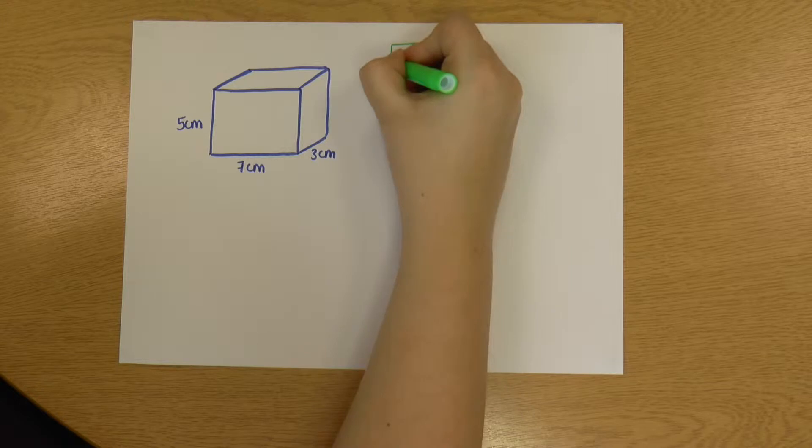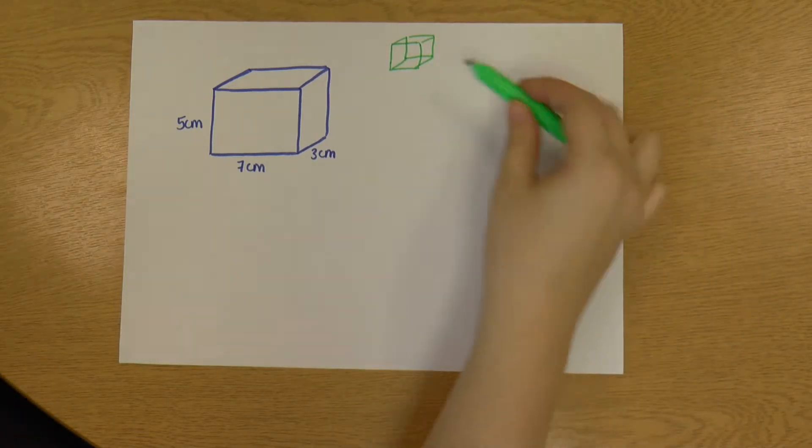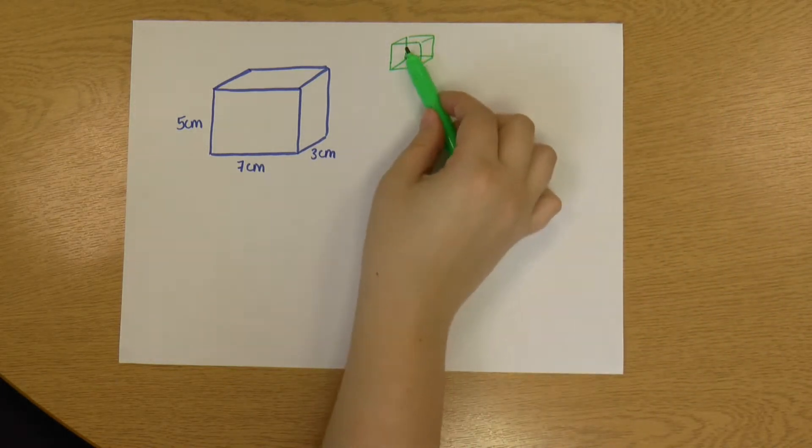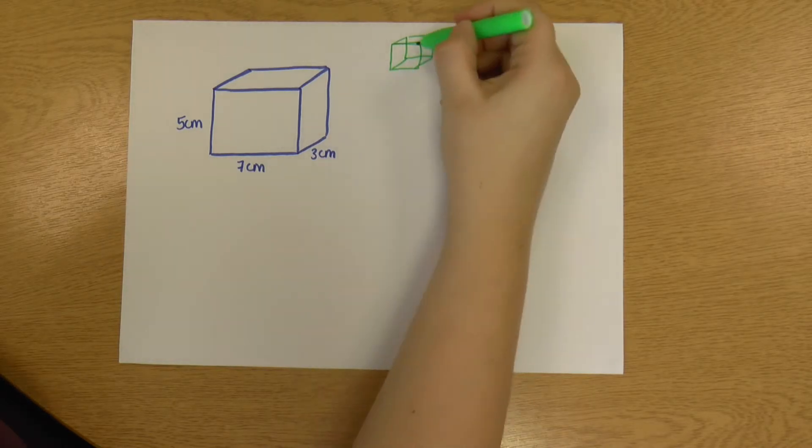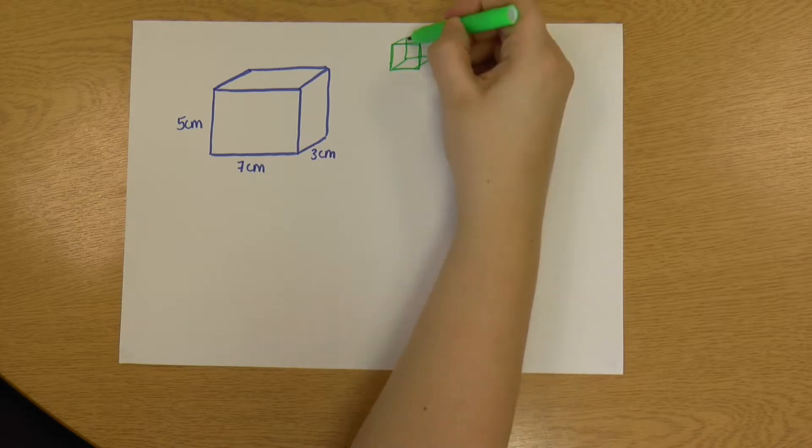If I draw one that's kind of see-through, like that, you can see better the three-dimensional structure. So we've got one side, which is this side here, and its opposite side at the back, which is that. That one there.